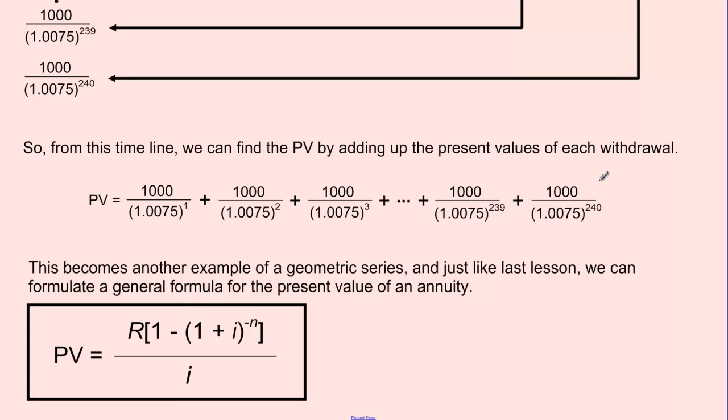And the common ratio here is 1.0075. So my common ratio for this geometric series is 1.0075, and in fact it's to the negative 1, because we're dividing it another 1.0075 each time. Now, just like before, I could put this into the geometric series equation, and we would come up with an equation for a simplified equation for this present value annuity.